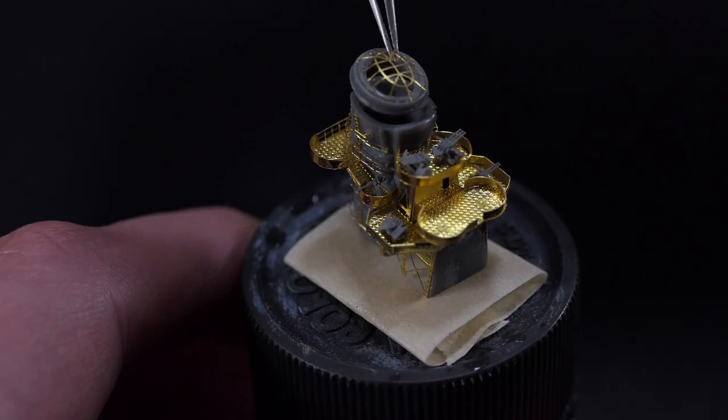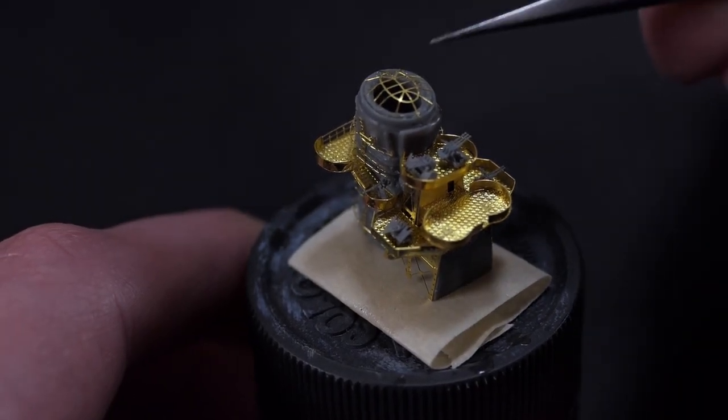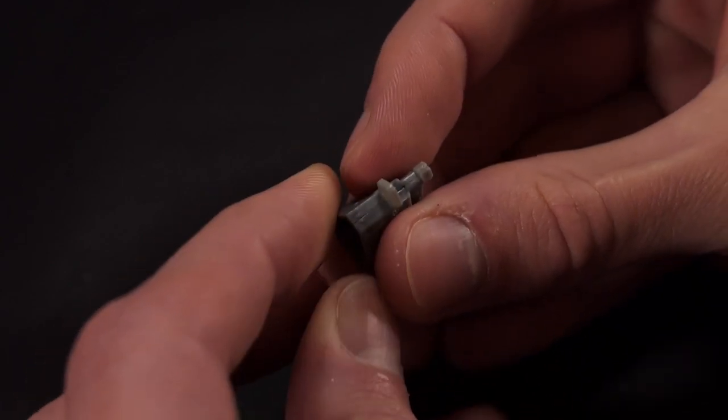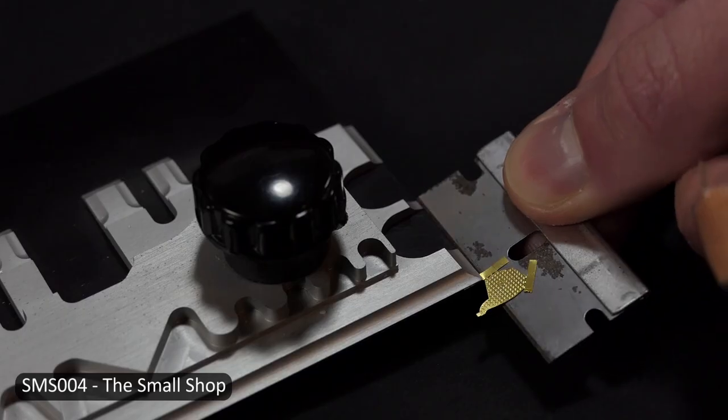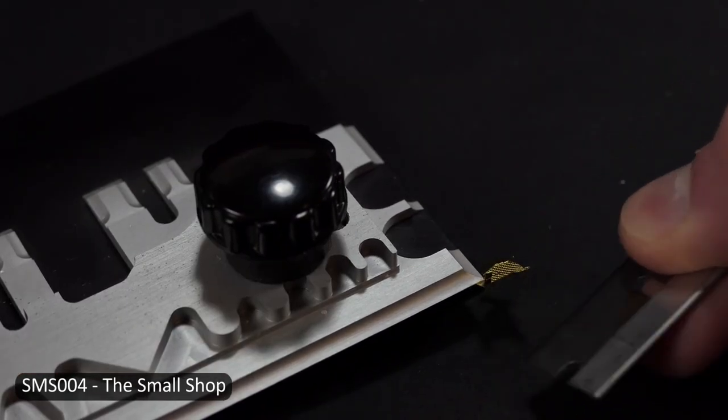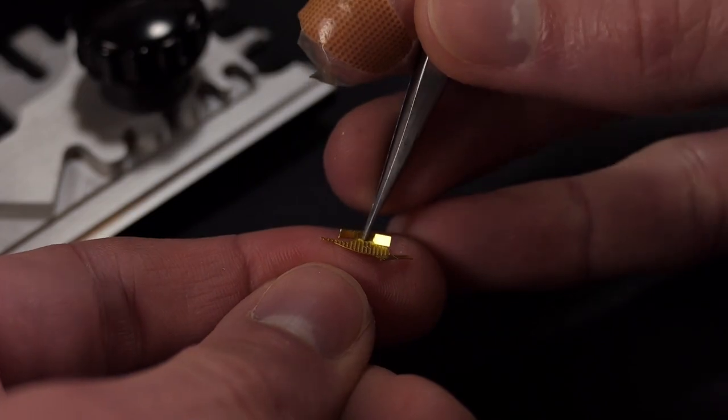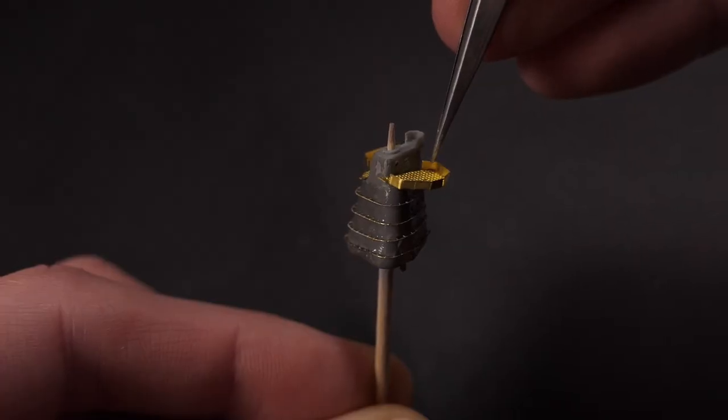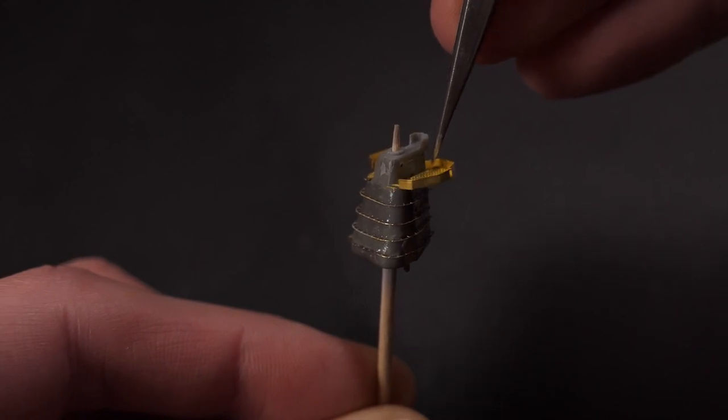The reason I didn't film the jack stay application, which is those ribs that go around the stacks, is because they were a complete nightmare. They're far from perfect and I was lucky to get them looking semi-decent. Sorry I do not have a great technique for how to apply these in 1/700th scale yet.